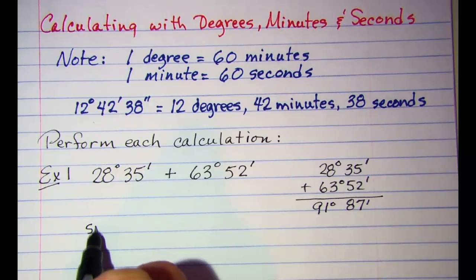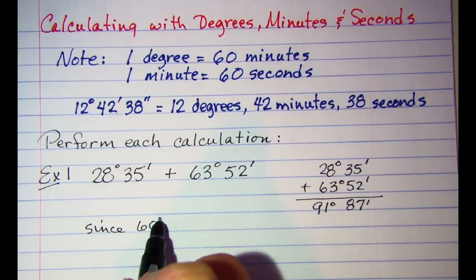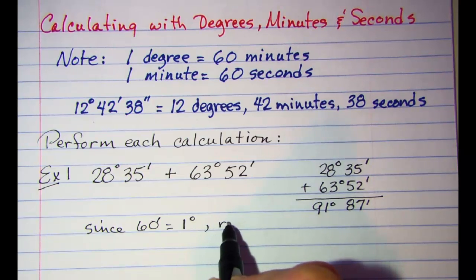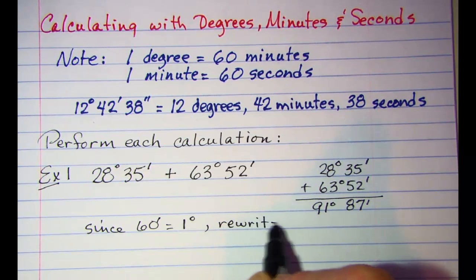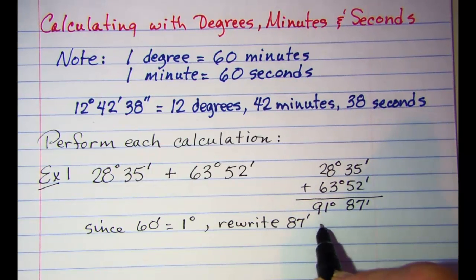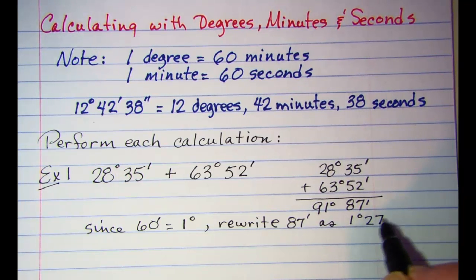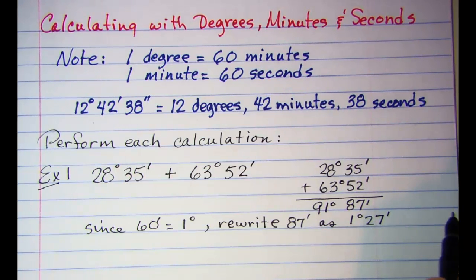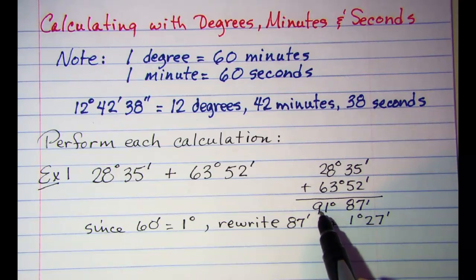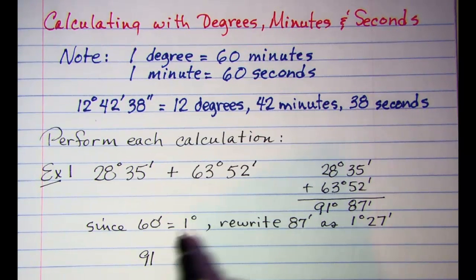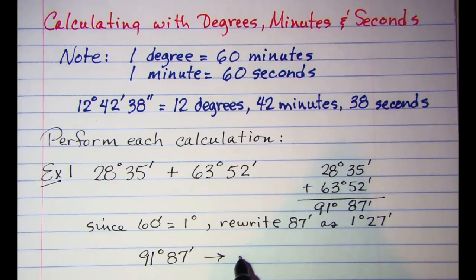The minutes sum to 87 minutes and the degrees sum to 91 degrees. Since 60 minutes equals 1 degree, we rewrite 87 minutes as 1 degree 27 minutes. That 1 degree is added to our 91 degrees, so our final answer is 92 degrees 27 minutes.